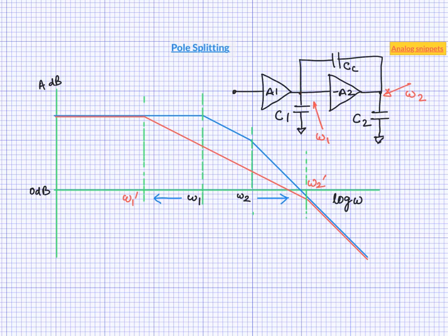But this begs a question that what if the intermediate pole was not the inner pole to begin with. That means, if we exchange the position of omega 1 and omega 2 in the frequency plot, then how would this pole movement look like?